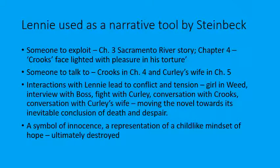It's always interesting to look at how a writer uses a character as a narrative tool, not just thinking about how they're described — if that's all you're talking about, you're falling into the trap of thinking of them as a real person when they're a construct of the author. The first point is that Lennie is someone to exploit. Even George exploits his position of power — look at the Sacramento River story in chapter three, where George tells Lennie to jump in, Lennie can't swim, and George has to save him. George recognises it was a moment where he exploited that power, abused his position of authority over Lennie.